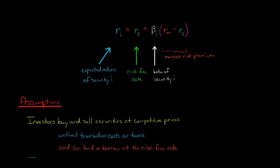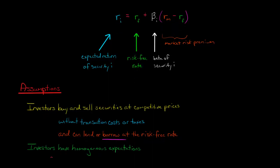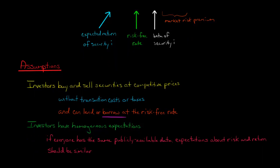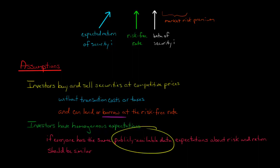We also assume that investors can borrow or lend money at the risk-free rate of interest. Additionally, we assume that investor expectations are homogeneous — meaning all investors have access to the same publicly available data, dealing with the same financial information and disclosures made by firms.